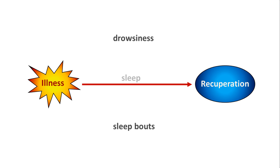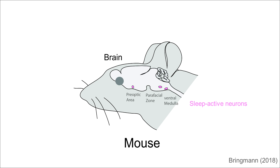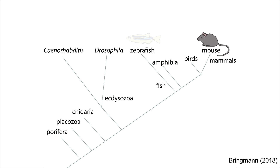Central to the induction of sleep are sleep-active neurons that depolarize specifically during sleep. They release inhibitory neurotransmitters such as GABA and neuropeptides onto wakefulness circuits to induce sleep. Sickness induces drowsiness and sleep not only in humans, but also in animals such as rodents, fish, flies, and even worms. These animals all have dedicated circuits and sleep-active neurons to induce sleep.